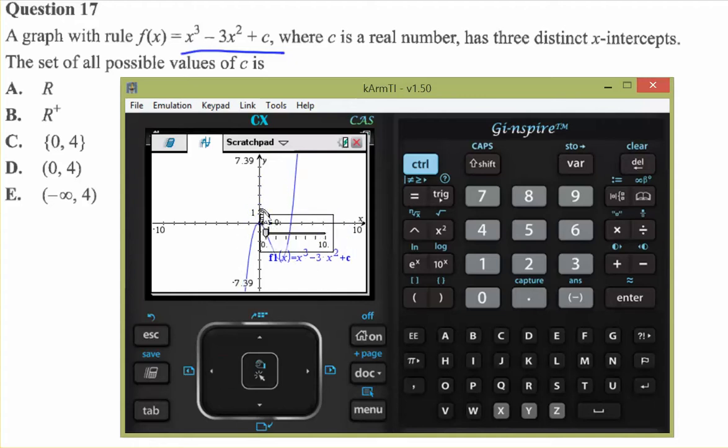Because at c equals 0, we have two x-intercepts. When we move up, we have three x-intercepts. And at c equals 4, we're back to 2.